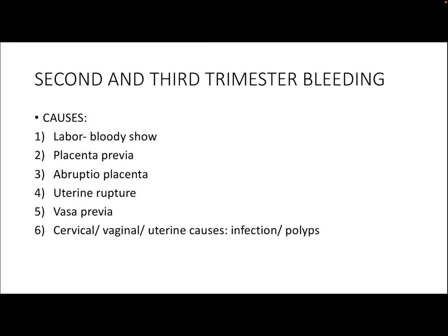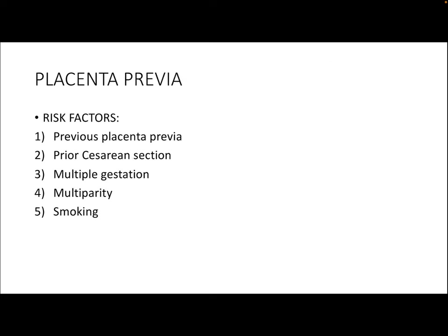Coming to the second and third trimester bleeding, common causes are of course labor, wherein the bleeding is because of bloody show. Then causes like placenta previa, abruptio placenta, uterine rupture, vasa previa, and also causes due to cervical, vaginal, or uterine infection or presence of polyps. This video is going to focus mainly on three causes: placenta previa, abruptio placenta, and vasa previa.